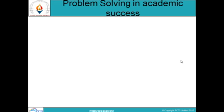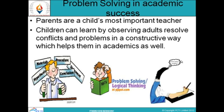Problem solving in academic success: helping your child learn how to problem solve is a critical skill for school readiness. Parents and caregivers are a child's first and most important teachers. Children learn by watching parents and caregivers handle different situations and solve problems. If a parent handles problems by yelling or throwing things, a child will learn to do the same. Children can learn by observing adults resolve conflicts constructively, which helps them in academics as well.